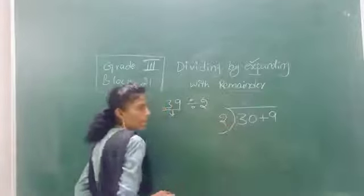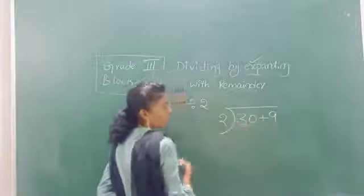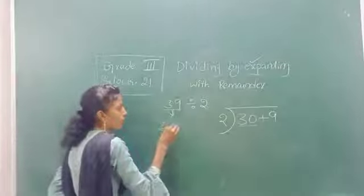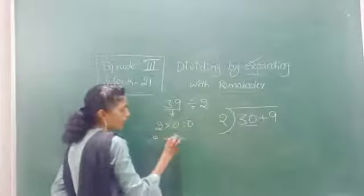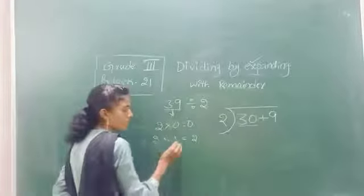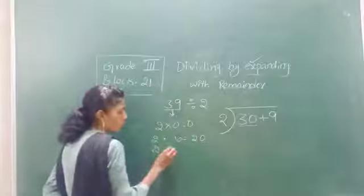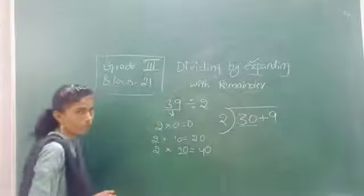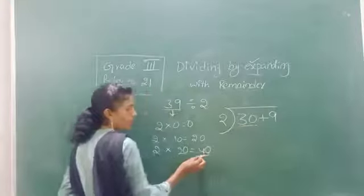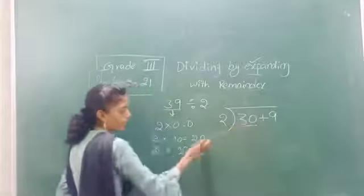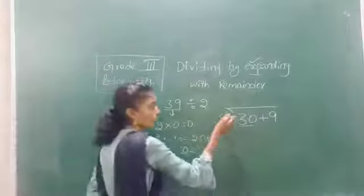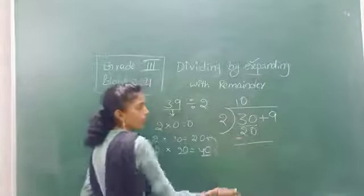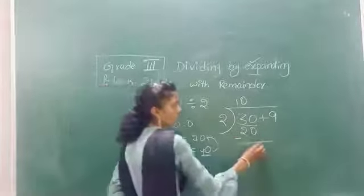Now, read the 2 times table until you get a number better than 30. 2 zeros are 0; 2 tens are 20. Which tables are asked to be read? The 10-times table of the divisor. 2 ones are 2, meaning 2 tens are 20. Next, 2 twos are 4, meaning 2 twenties are 40. Until you get better than 30 — 40 is better than 30. So go to the number before it: 2 tens are 20. Now subtract: 30 minus 20 is 10.